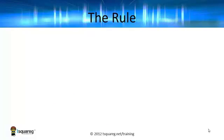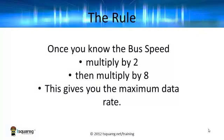There's a simple rule that we can follow. Once you know the bus speed or the clock speed, multiply it by 2, then multiply it by 8, and you'll end up with the maximum data rate.